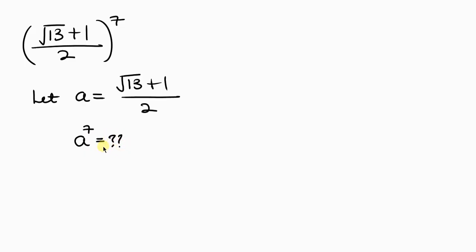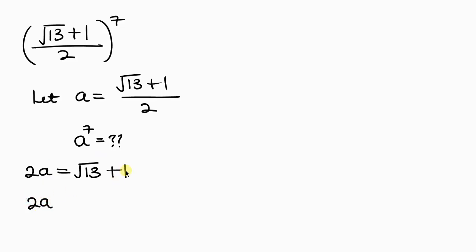Before that, let's cross-multiply. We have a times 2, giving 2a equal to the square root of 13 plus 1. Moving 1 to the left-hand side, we have 2a minus 1 equal to the square root of 13.